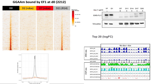When we inhibit EWS-FLI1 expression in Ewing cells using a dox-inducible system where you can monitor EWS-FLI1 expression depending on dox, you completely lose the binding at GGAA repeats. Upon washing out the dox and re-expression of EWS-FLI1, you recapitulate the binding. And where you lose EWS-FLI1 binding, you lose ATAC-seq signals, you lose open chromatin, and you lose histone activation marks like H3K27-acetylated and H3K4-monomethyl.